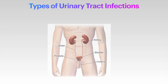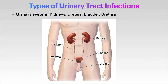As you see here, the urinary system consists of kidneys, ureter, bladder and urethra. The urinary tract can be divided into upper urinary tract and lower urinary tract. The upper urinary tract consists of two kidneys and ureters, whereas the lower urinary tract consists of bladder and urethra.